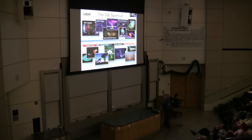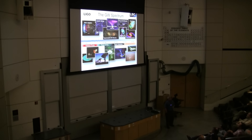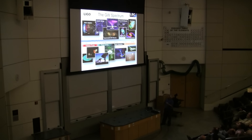Gravitational waves come in all kinds of frequencies, not just the ones accessible to ground-based detectors. Lower frequency gravitational waves in the millihertz band can be detected by detectors in space. This is an artist's conception of the Laser Interferometer Space Antenna, LISA, which we hope will fly in the next 10 to 15 years. The LIGO detectors are Michelson interferometers with arms that are 4 kilometers long. LISA has arms of 4 million kilometers long.